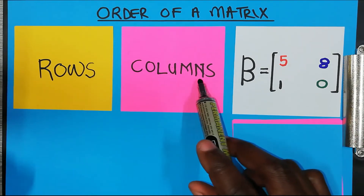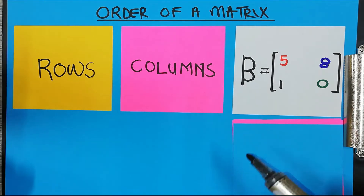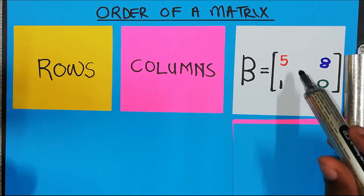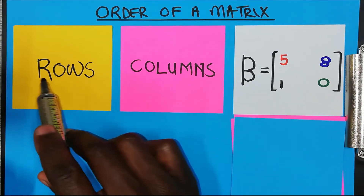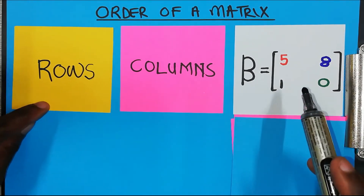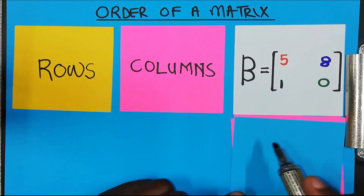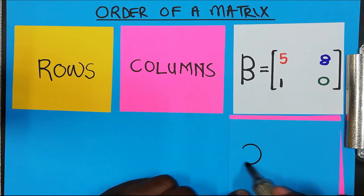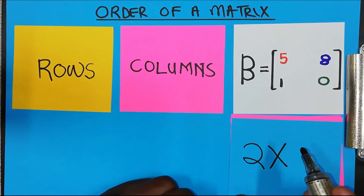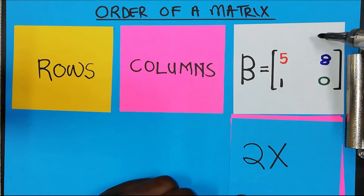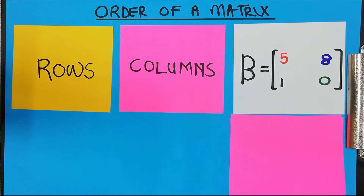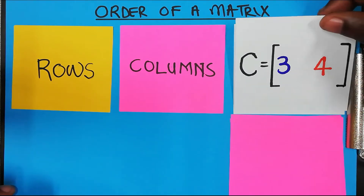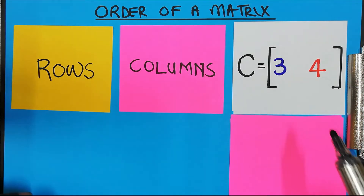What is the order of matrix B? Matrix B has one, two rows — so you write two. And how many columns does it have? One, two columns. So we call this matrix a two by two matrix.